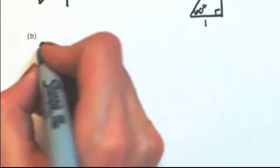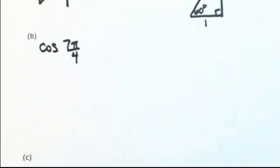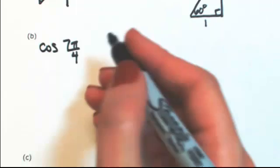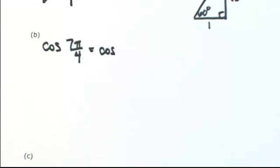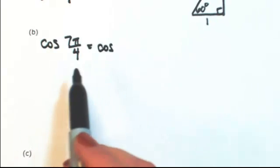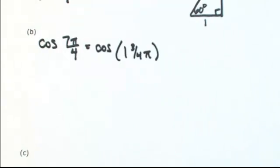Let's try another one. Let's say the cosine of 7 pi over 4. Me personally, I like to rewrite that as a mixed number just so I can gauge it a little bit better. So 4 goes into 7 once with 3 left over. Now I know where it is.